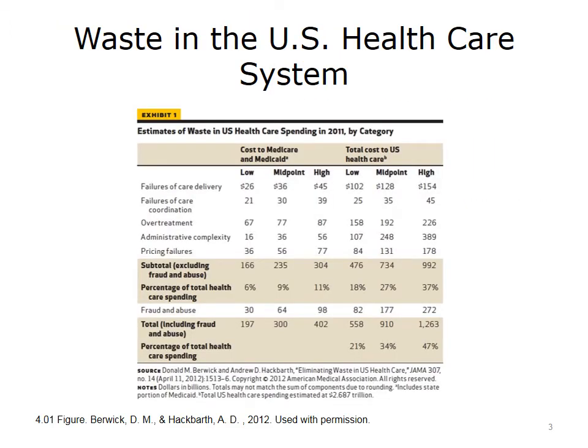This slide highlights the enormous amount of waste in the healthcare system and is taken from an article by Don Berwick in the April 2012 issue of JAMA. In the lower right corner of the slide, the estimates of waste from this study range from a low of 21% to a high of 47%, which is in line with other studies that have examined waste in the U.S. healthcare system. This waste generally falls into three sources: behavioral, clinical, and operational.